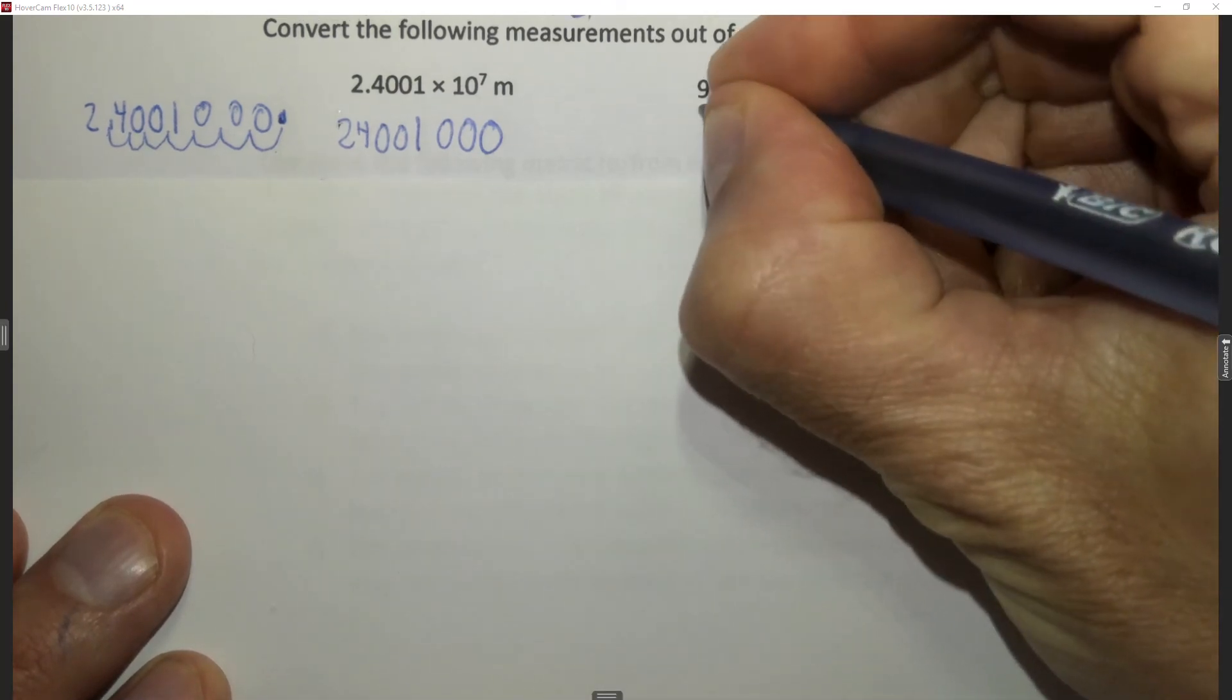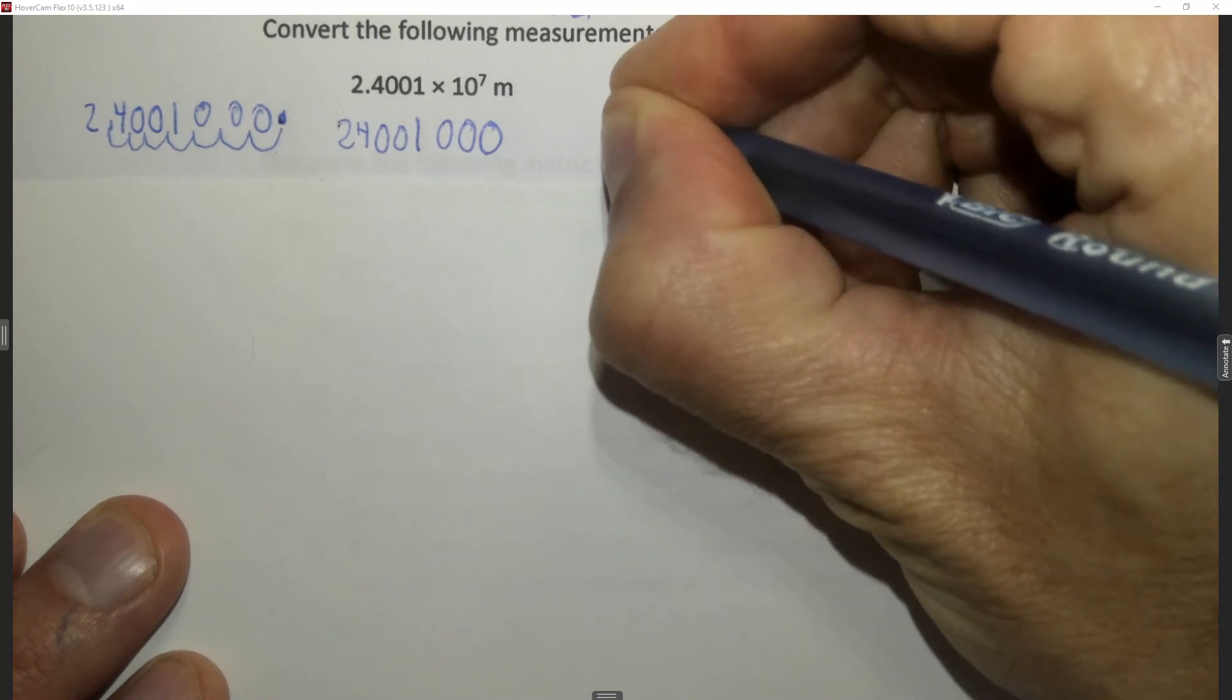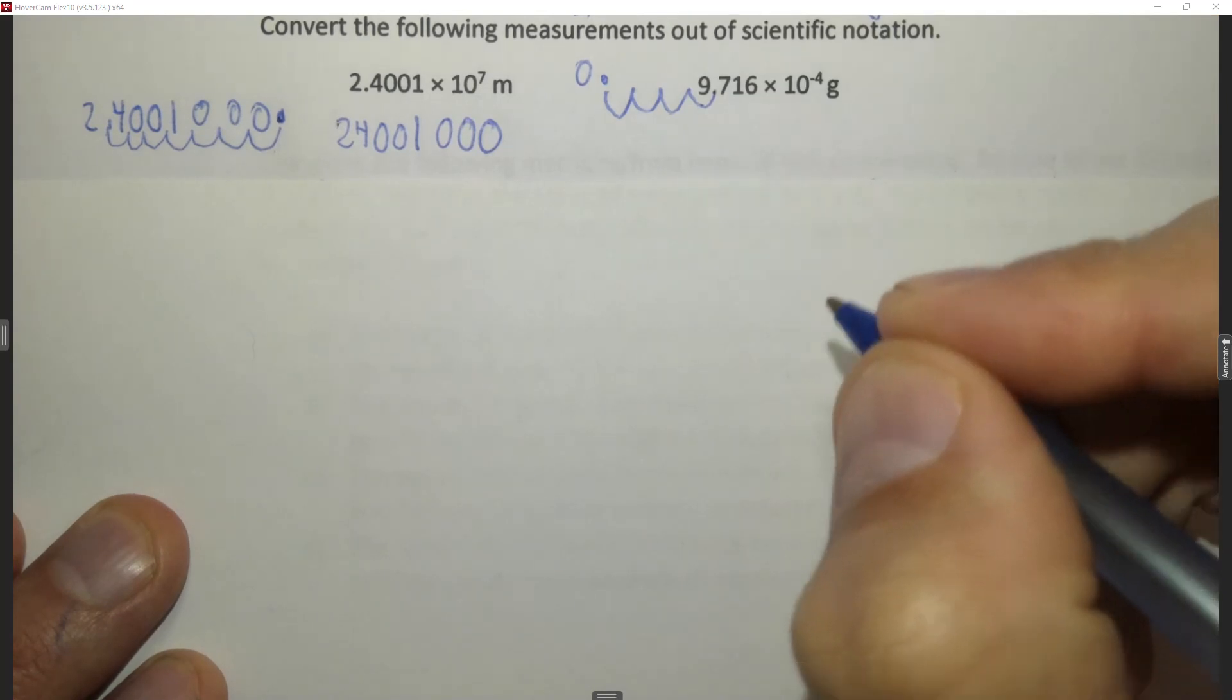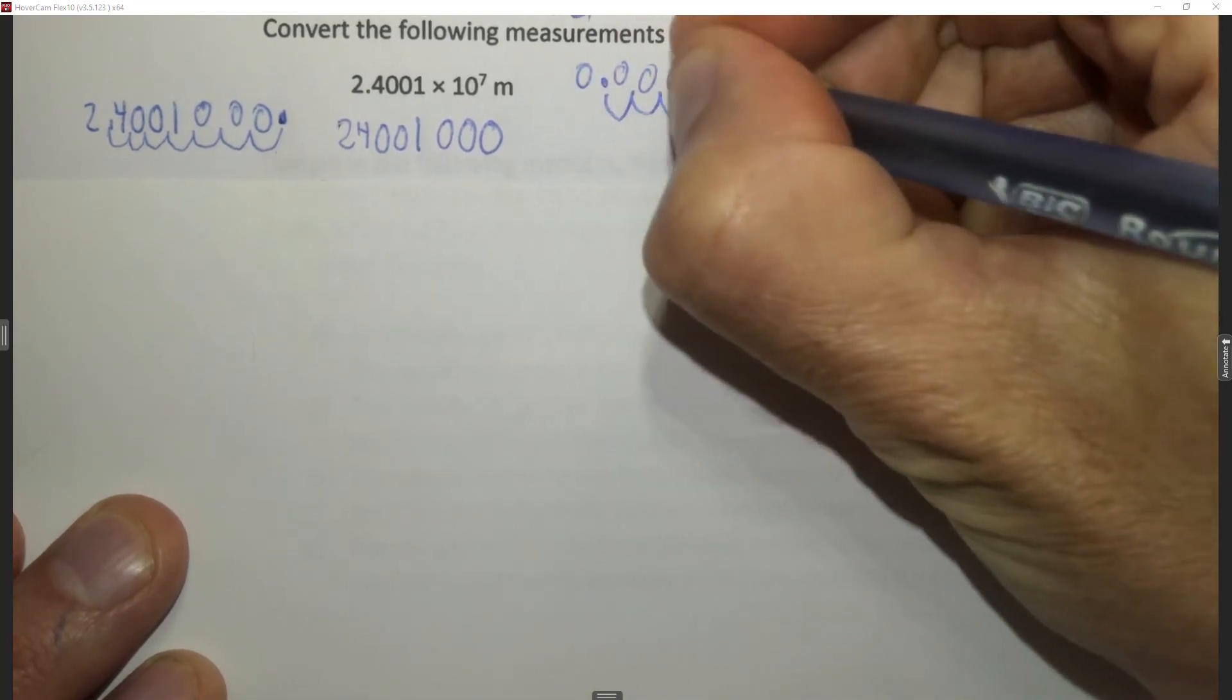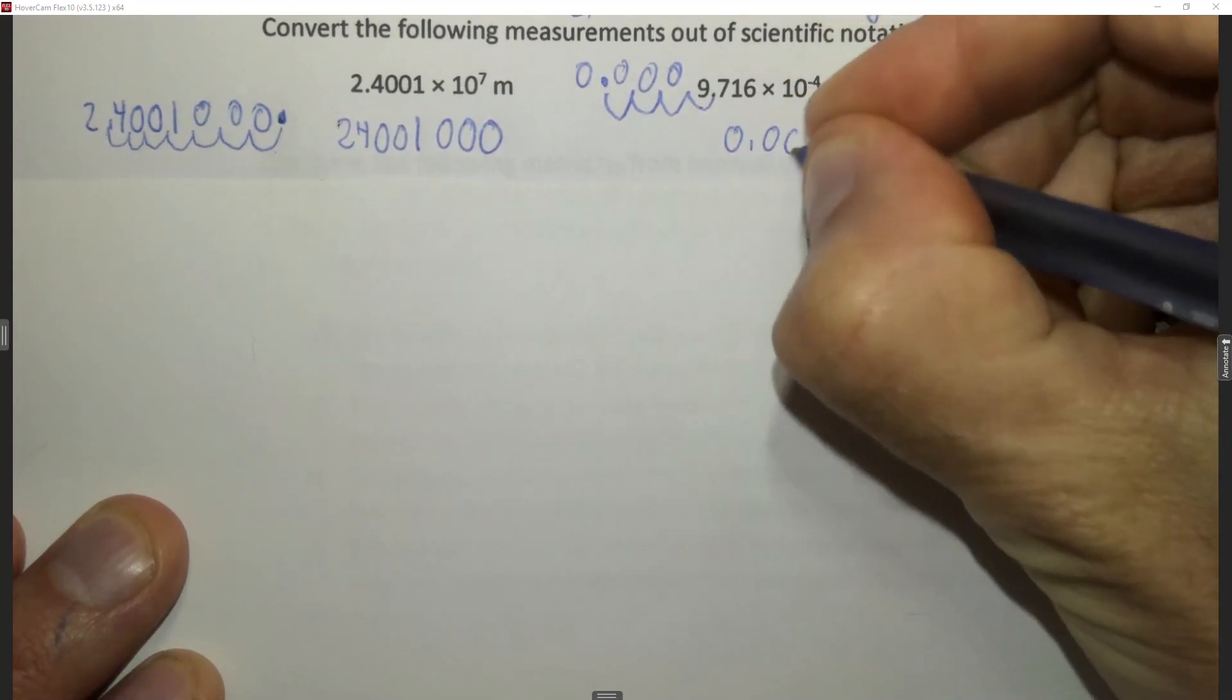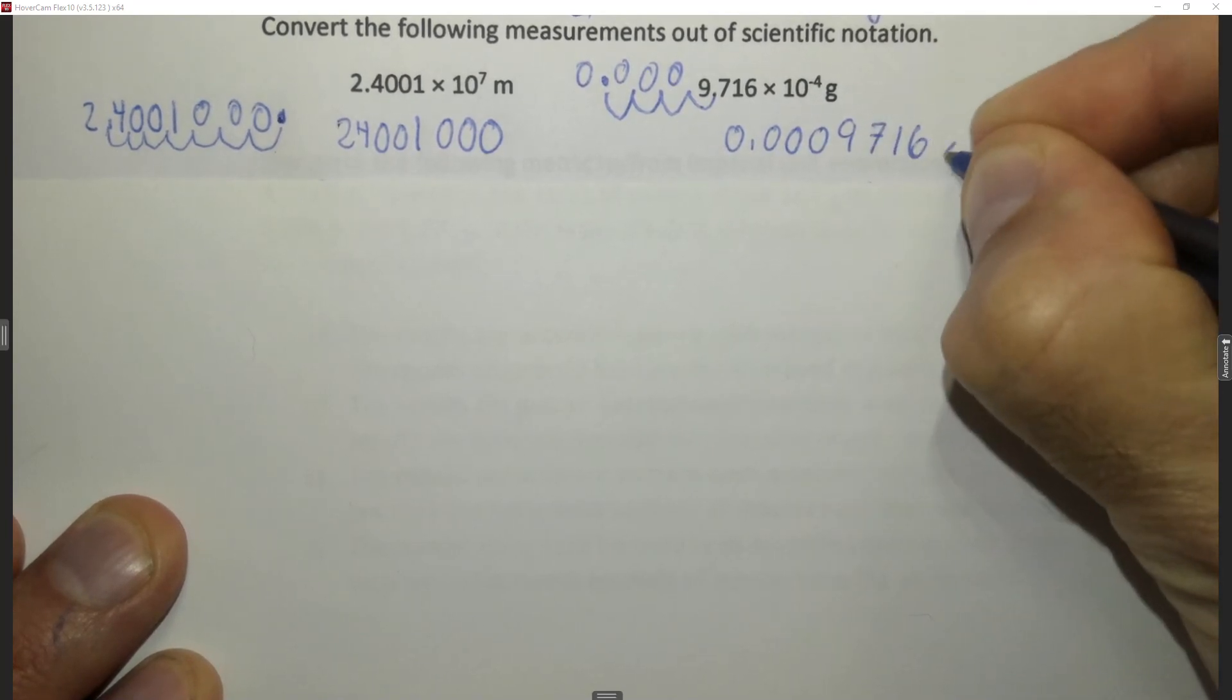So here we could just move it 1, 2, 3, 4 times. We put the cosmetic zero out front and then everywhere here we put 0, 0, 0. So to rewrite we get 0.0009716 grams.